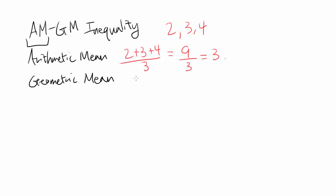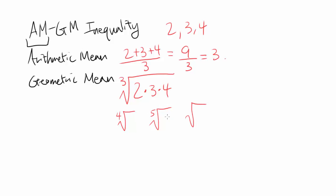For Geometric Mean, you multiply all the numbers together and you take the cube root. In this case it's cube root because you have 3 numbers. If you have 4 numbers, you take the 4th root; 5 numbers, the 5th root; 2 numbers, the square root. You take the nth root of the product of the numbers, where n is how many numbers you have. So in this case, you get cube root of 2 times 3 times 4, which is 24.